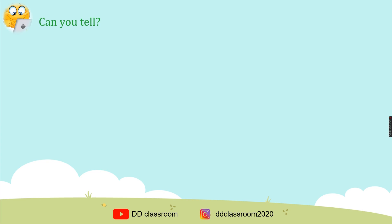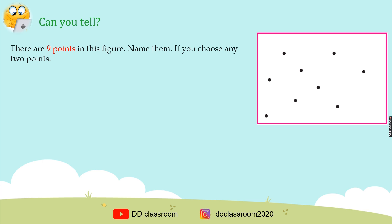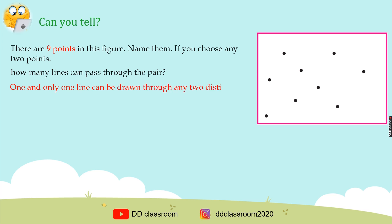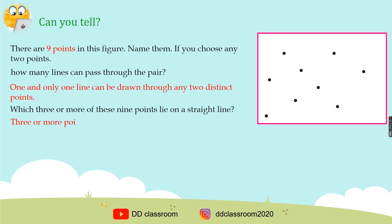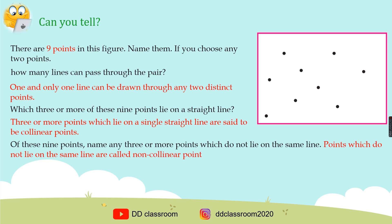Can you tell? There are nine points in this figure. Name them. If you choose any two points, how many lines can pass through the pair? One and only one line can be drawn through any two distinct points. Three or more points which lie on a single straight line are said to be collinear points. Points which do not lie on the same line are called non-collinear points.